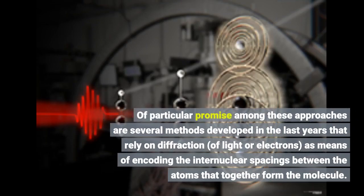Of particular promise among these approaches are several methods developed in the last years that rely on diffraction of light or electrons as means of encoding the internuclear spacings between the atoms that together form the molecule.